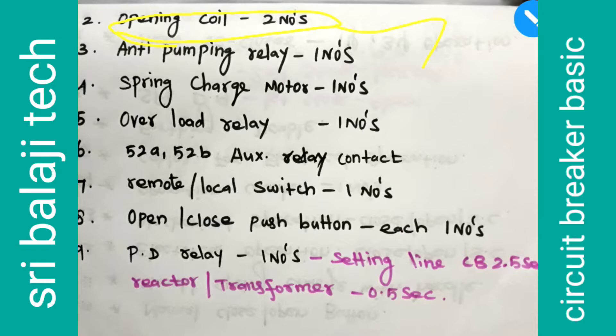First, you can use a standby. If we close the coil, we will go to distance 1. If we close the coil, we will go to distance 2. That's why we have a scheme.